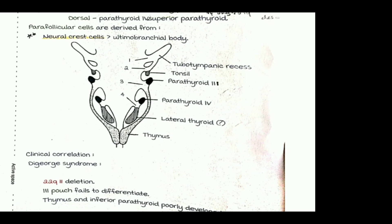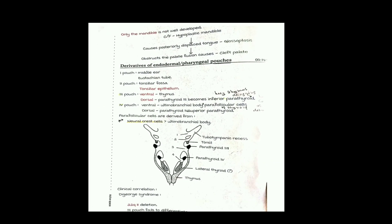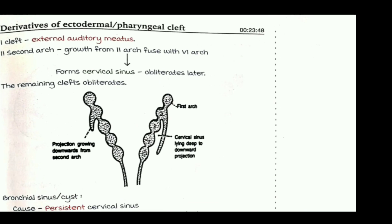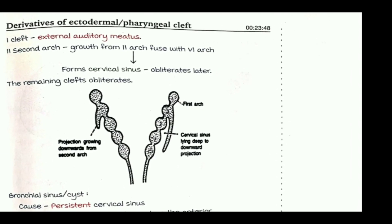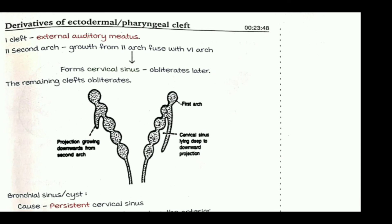A clinical correlation is DiGeorge syndrome, caused by a 22q11 deletion. In DiGeorge syndrome, the third pouch fails to differentiate, so the thymus and the inferior parathyroid are not formed properly.